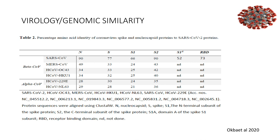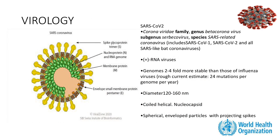This table illustrates the genomic similarity based on percentage of amino acid in protein sequences, with the highest similarity to SARS-CoV-1. For the virus structure, it belongs to the beta coronavirus genus, subgenus Sarbecovirus. It is an RNA virus with a genome two to four times more stable than influenza, meaning mutations do not occur as frequently. It has a coiled helical nucleocapsid and spherical envelope particles with projecting spike proteins that attach to host cells.